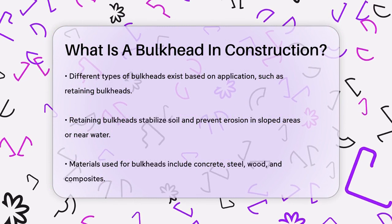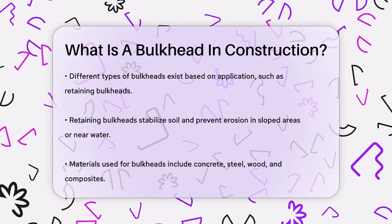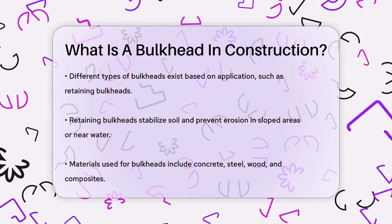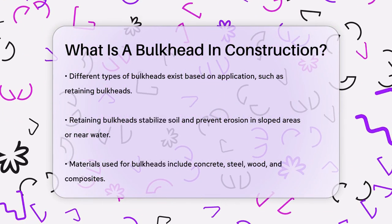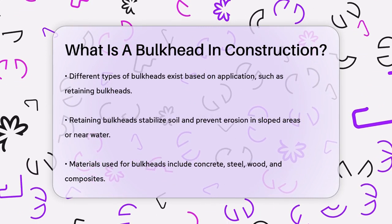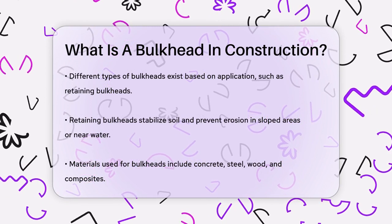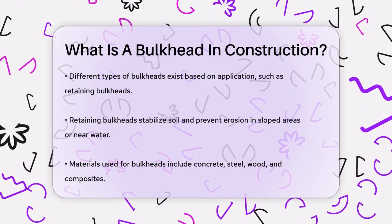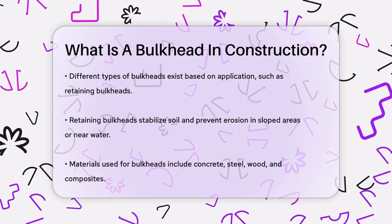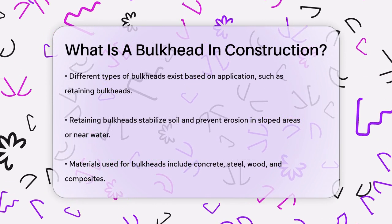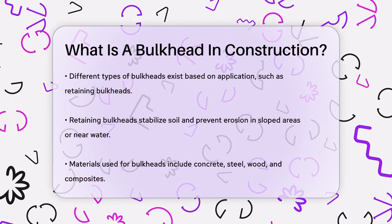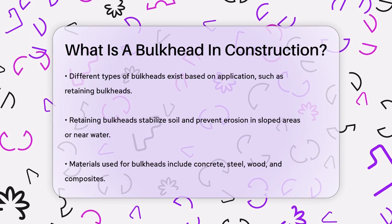In residential and commercial construction, bulkheads can be made from various materials such as concrete, steel, wood, and composite materials. The choice of material depends on the structural requirements and environmental conditions. For example, wooden bulkheads are cost-effective and suitable for moderate durability, while concrete bulkheads are more robust and durable, making them ideal for high-stress environments.